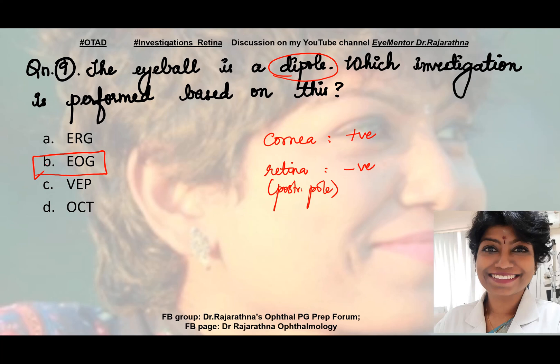The answer is electrooculogram — EOG — where you measure the resting membrane potential of the macula, assuming that the eyeball is a dipole. Just to give the abbreviations: ERG is electroretinogram, EOG is electrooculogram, VEP is visual evoked potential — also mentioned as VER (visual evoked response) — and OCT, which all of you know. I'll explain the EOG technique sometime later.